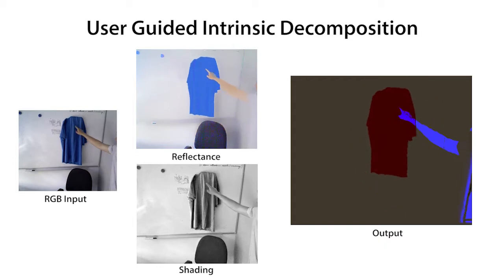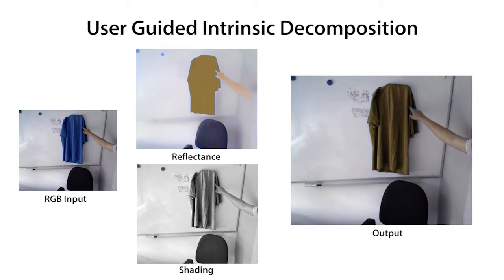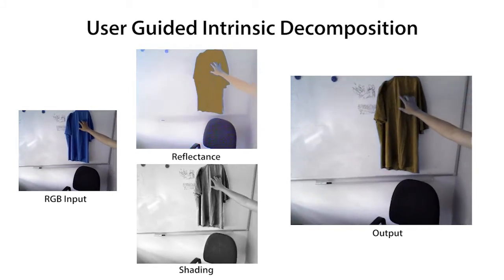The propagated stroke region is marked in red. With another touch, the user recolors the shirt. Observe the photorealistic output.